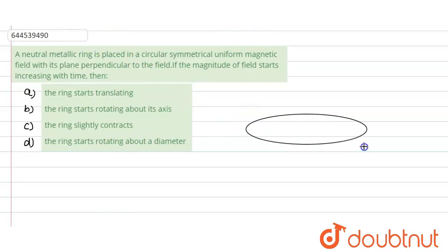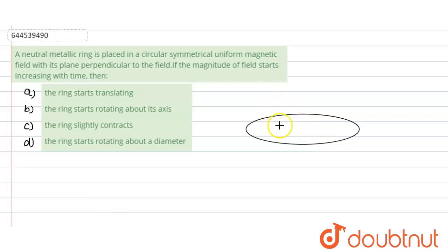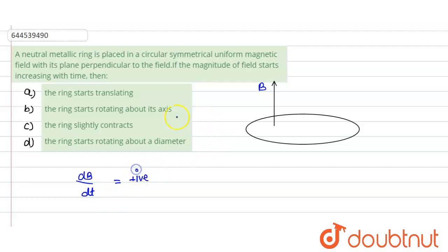Let's say that this is our ring which is kept horizontally. From the interior of this ring, the magnetic field is going upward, since it is a circular uniform magnetic field with the plane perpendicular to the field. This is the direction of the magnetic field. Now the magnetic field is increasing with respect to time, meaning dB/dt is positive — this is a positive quantity.